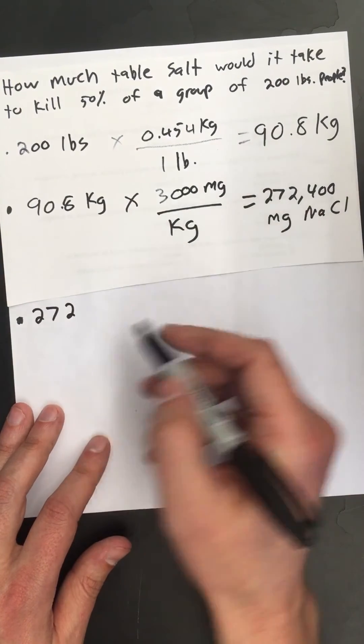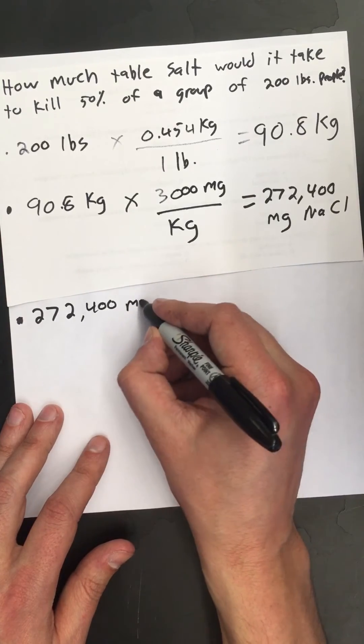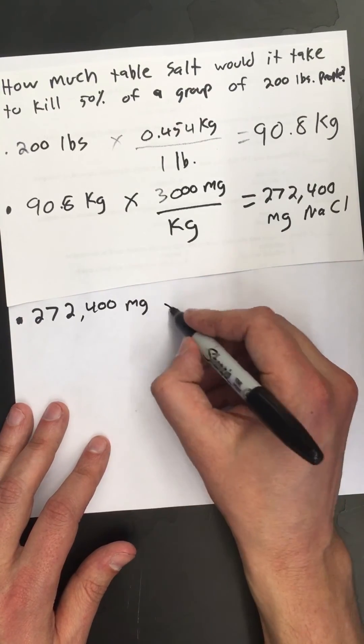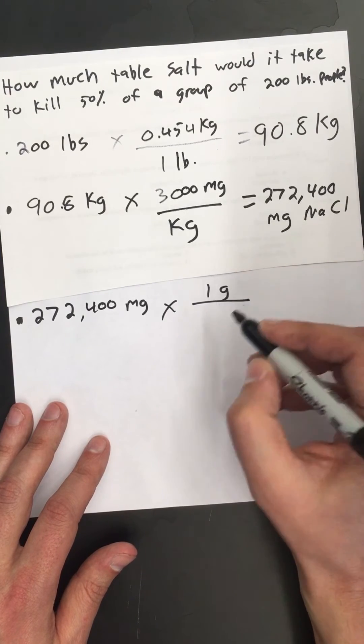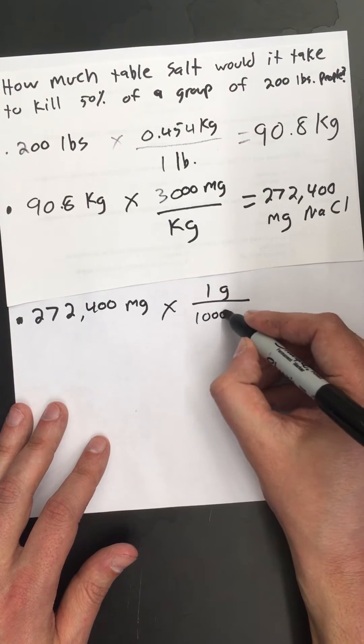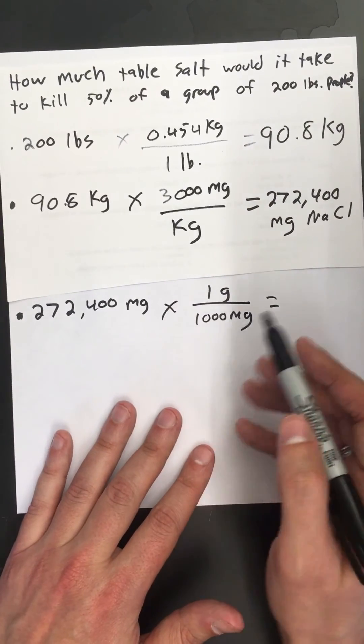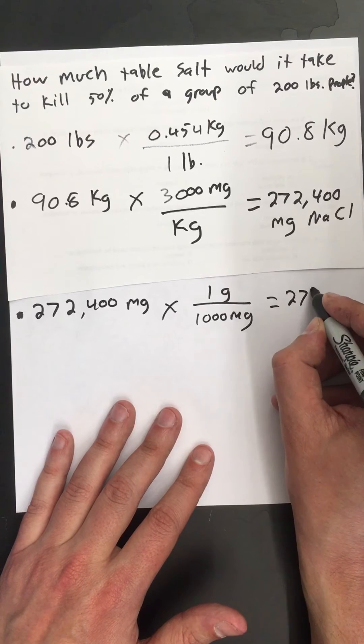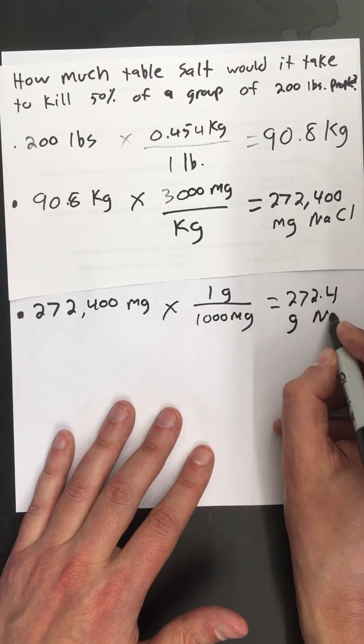Step 3, let's convert milligrams to grams because that's a little more familiar to most people. We're going to take my answer from here, and to put it into grams all I have to do is say that one gram is equal to a thousand milligrams. So basically I'm just taking this number and dividing by a thousand. That's going to give me 272.4 grams of table salt.